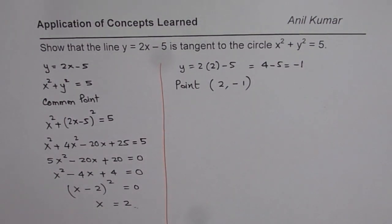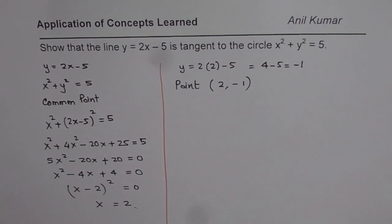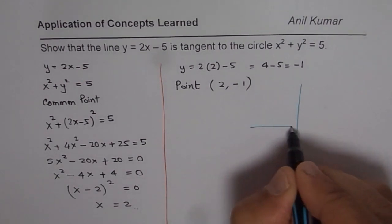So at this point on the particular circle, the line 2x minus 5 will be tangent. So what you can do is, you can also sketch and understand the situation better.